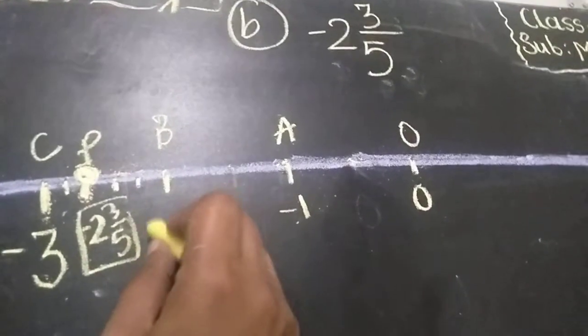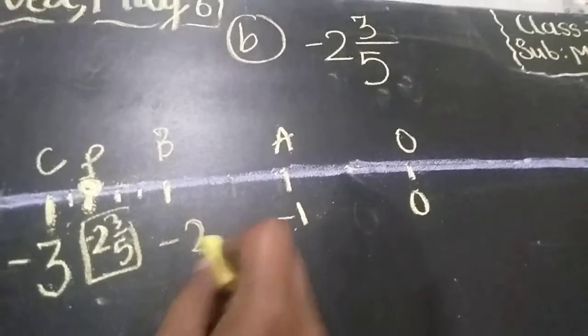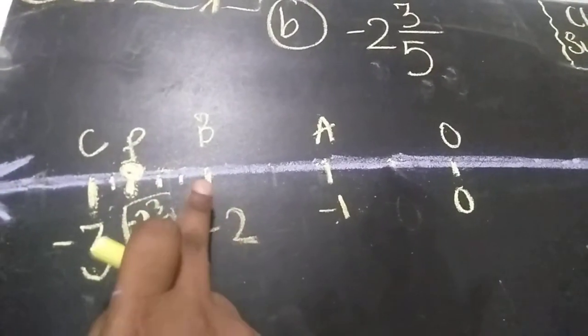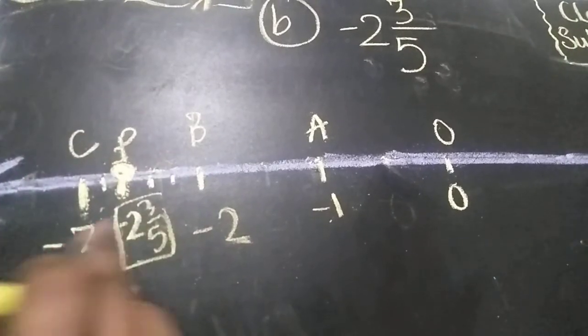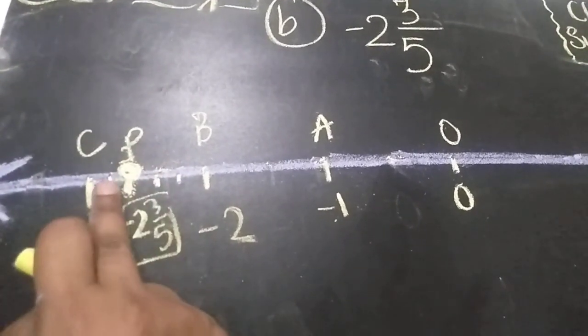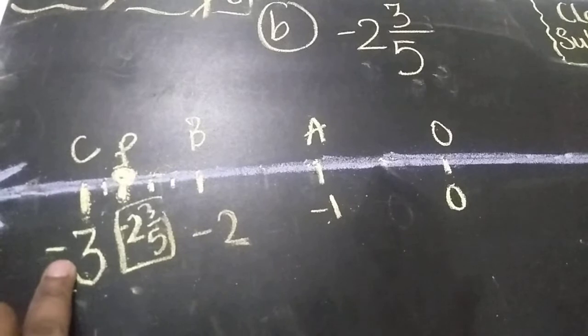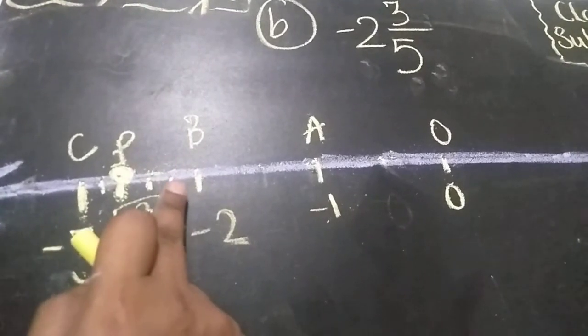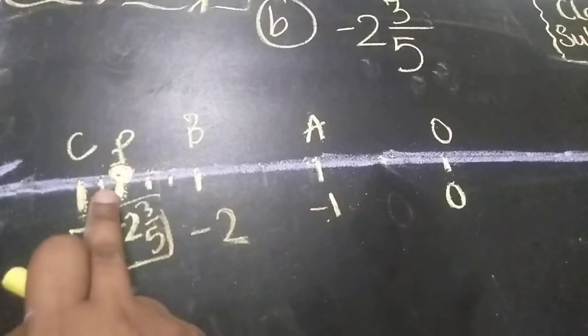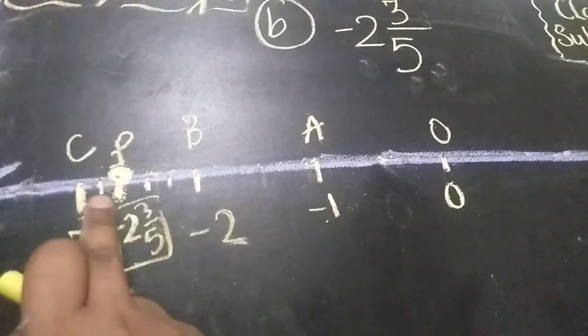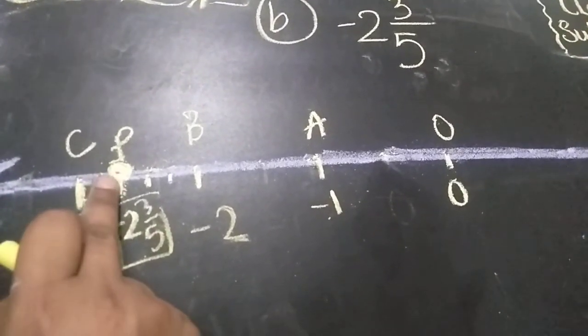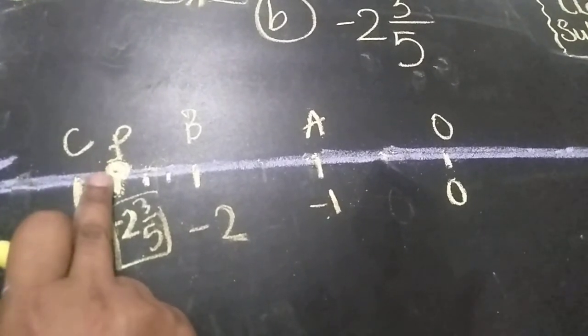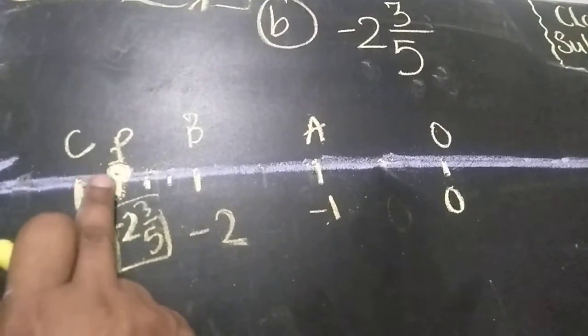Again, I am repeating here. Here is minus 2 and here is minus 3. You have to divide minus 2 to minus 3 in 5 equal parts. 1, 2, 3, 4. This is the 5th part. After that you have to count 1 by 5, 2 and here is 3 by 5. That means it is minus 2, 3 by 5 on a number line. So this third part represents minus 2, 3 by 5.